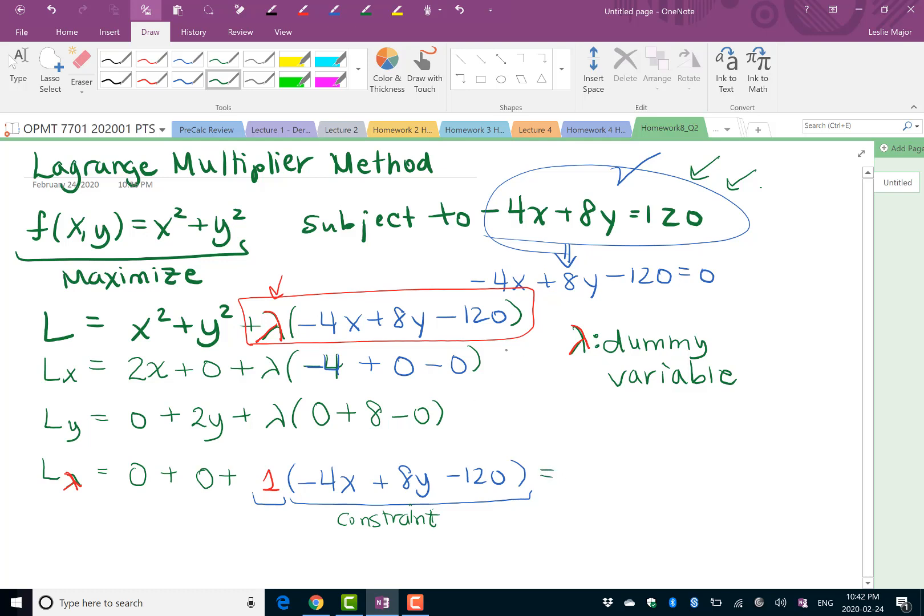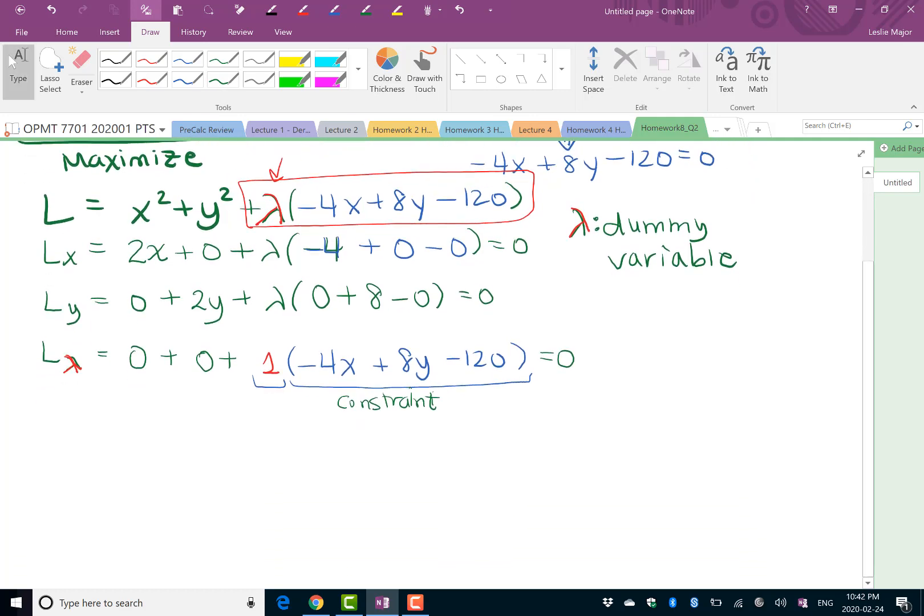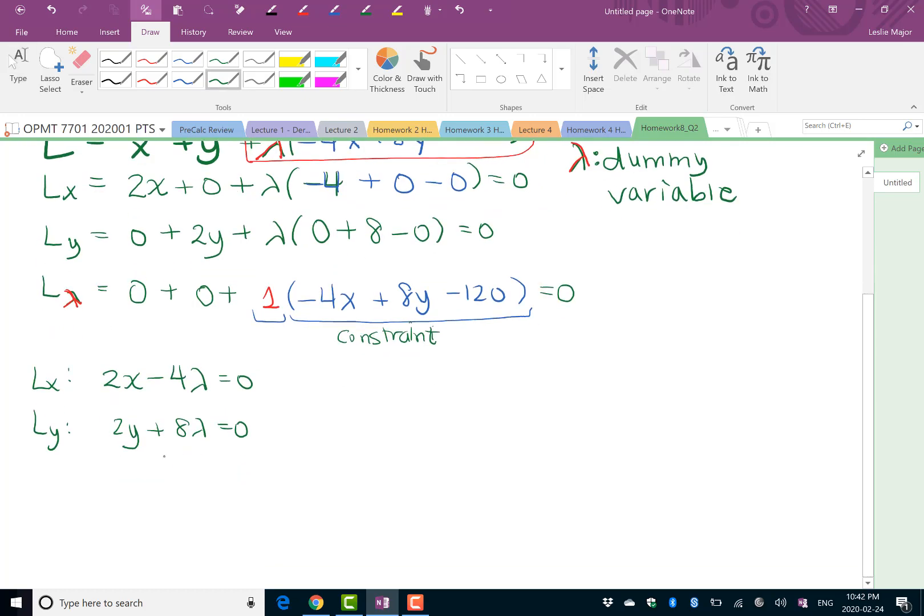We do just like we do with multivariate optimization without constraints: we take all of our derivatives and set them equal to 0 and solve. We have three equations: 2x minus 4 lambda equals 0 from Lx, 2y plus 8 lambda equals 0 for Ly, and negative 4x plus 8y minus 120 equals 0 for L lambda. This last one is our constraint.